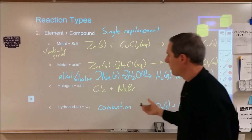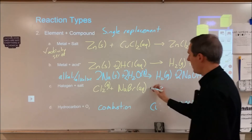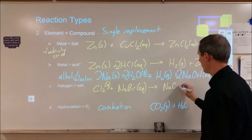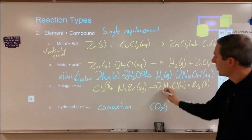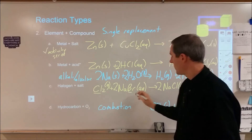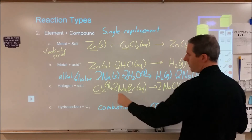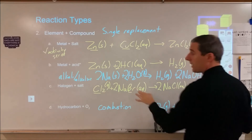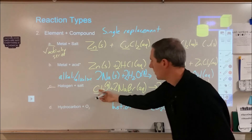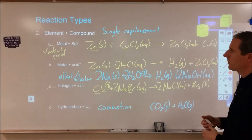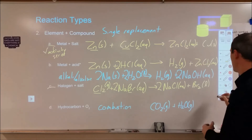Lastly, we have halogens plus salt. If we're looking at chlorine gas being bubbled through sodium bromide solution, we have the chlorine gas and sodium bromide is aqueous. That reaction is going to happen: we're going to produce sodium chloride plus bromine liquid. The halogen displaces the halide from the compound — the anion is being traded out. When you have a non-metal added to a salt, it's going to displace the anion. Be careful not to try to bond chlorine with bromine; that's not what actually happens.